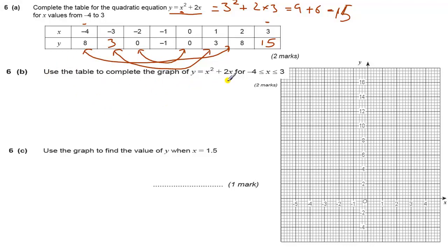Then you've got to use the table to complete the graph. For the graph y equals x squared plus 2x between minus 4 and 3, essentially that's just turning to plot these values. Our first value we're going to plot, we'll start with this one, 3, 15. So we go across 3 and up to 15, which is going to be about there.